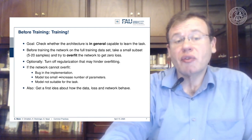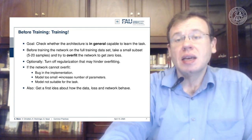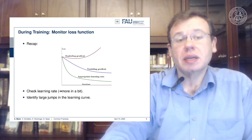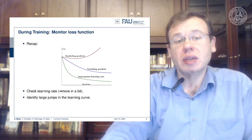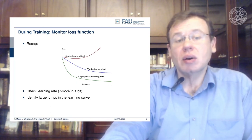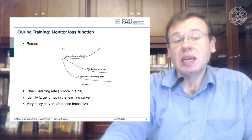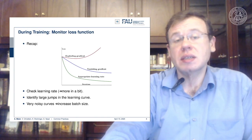Also get a first idea about how the data, the loss, and the network behave. Monitor the loss function — these are typical loss curves. Make sure you don't have an exploding or vanishing gradient, and check that you have the appropriate learning rate. Identify large jumps in the learning curve. If you have very noisy curves, try to increase the batch size, since noisy loss curves can be associated with too-small mini-batches.